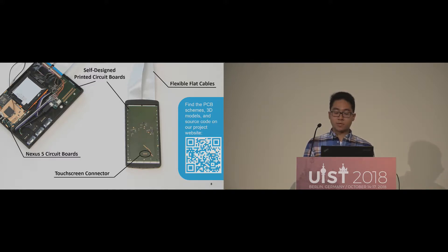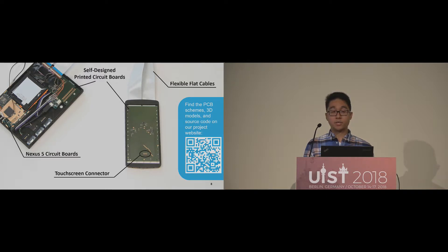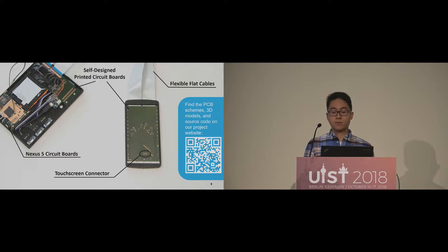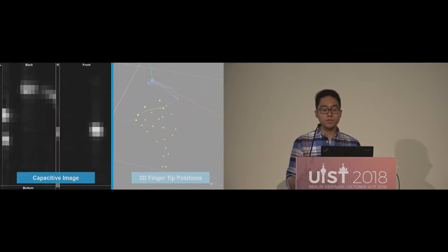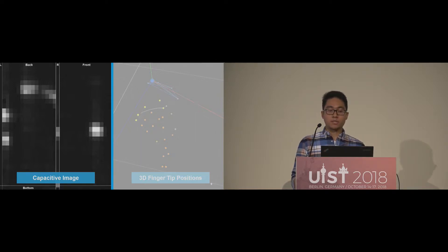Our devices communicate over a Wi-Fi network operated by the front device. The back side and the edges send their capacitive measurements to the front side, which merges and provides them to the application layer so that each Android application can use these measurements. The capacitive measurements are represented by a capacitive image, which is available every 50 milliseconds.